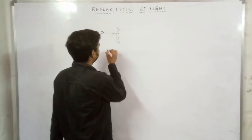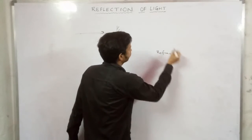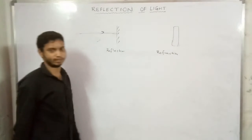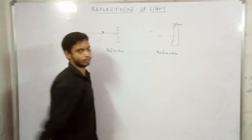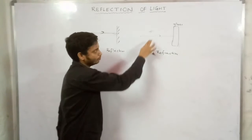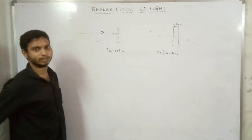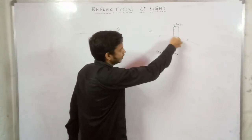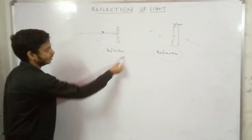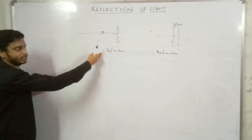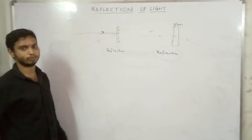Now, let's also note refraction. When we have a transparent substance — like air and glass — these are two different mediums. When light enters from one medium to another medium, it deviates or bends. That phenomenon is called refraction. So, reflection is when light falls on a surface and returns, while refraction is when light enters a new medium and deviates.